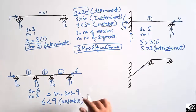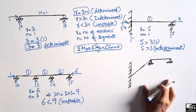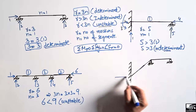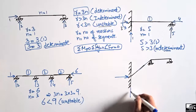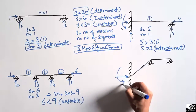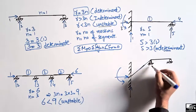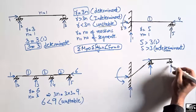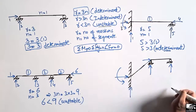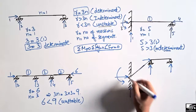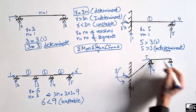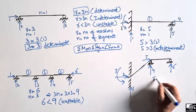Moving to the fourth beam: it has a fixed support, which can take vertical load, horizontal load, and moment, and a roller support, which can take only vertical load. Counting the reactions: 1, 2, 3, 4, 5, 6 — so R equals 6.